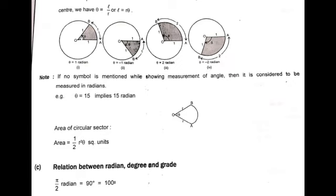It is important to note that if no unit symbol is mentioned when showing the measurement of an angle, it is considered to be in radians. For example, if θ = 15, this implies 15 radians. Using this concept, we can also find the area of a sector: area of sector = ½r²θ. Since θ = l/r, this can also be written as ½r·l, where l is the length of the arc.